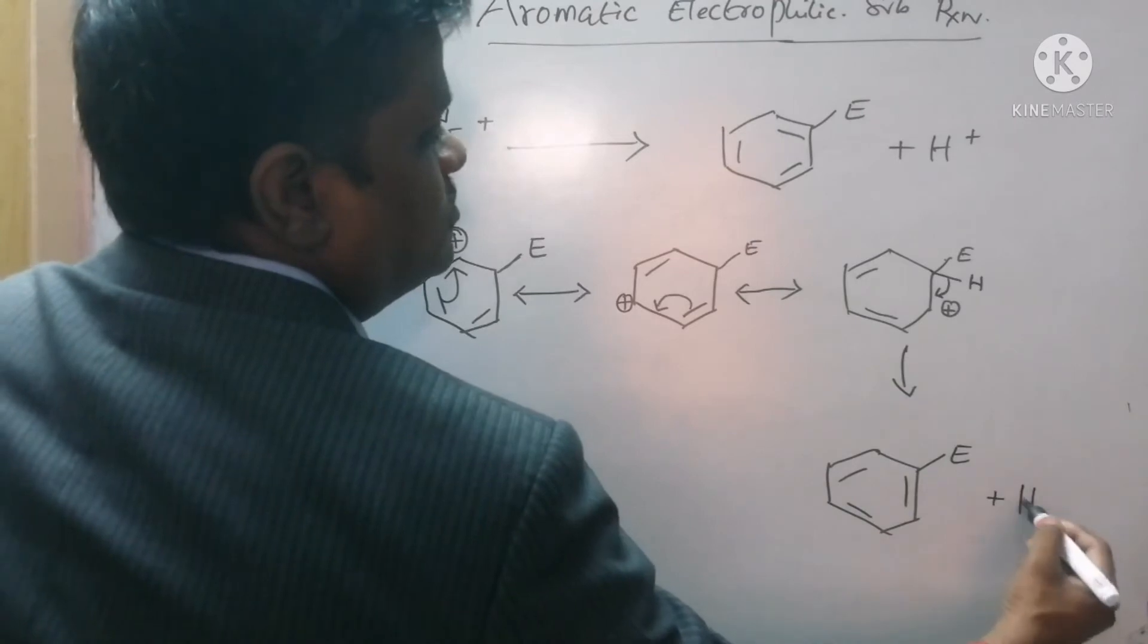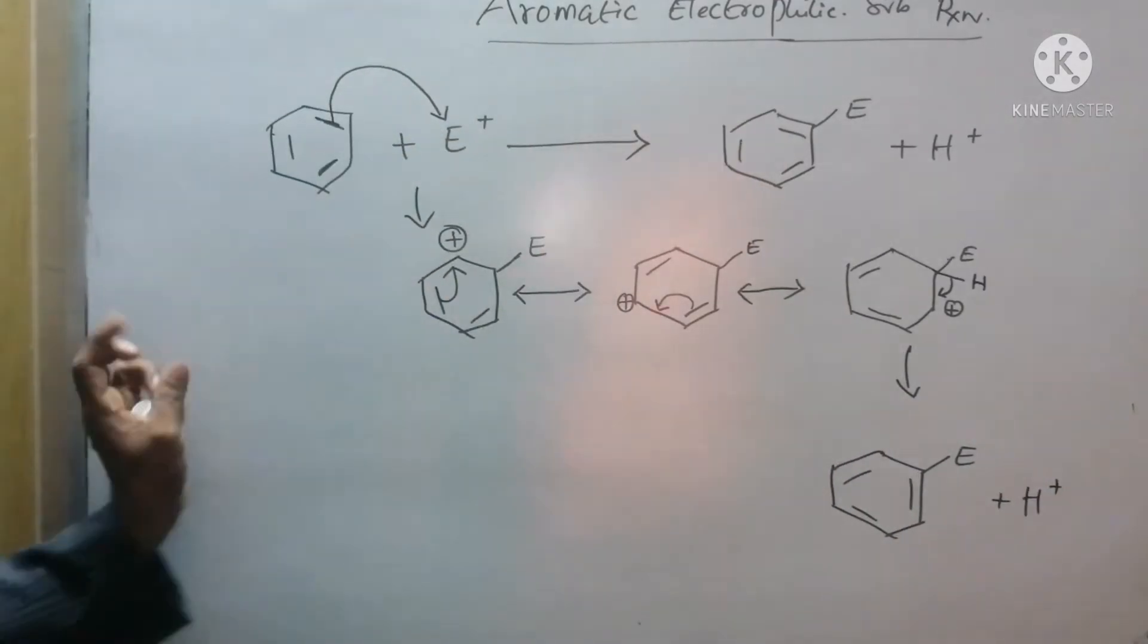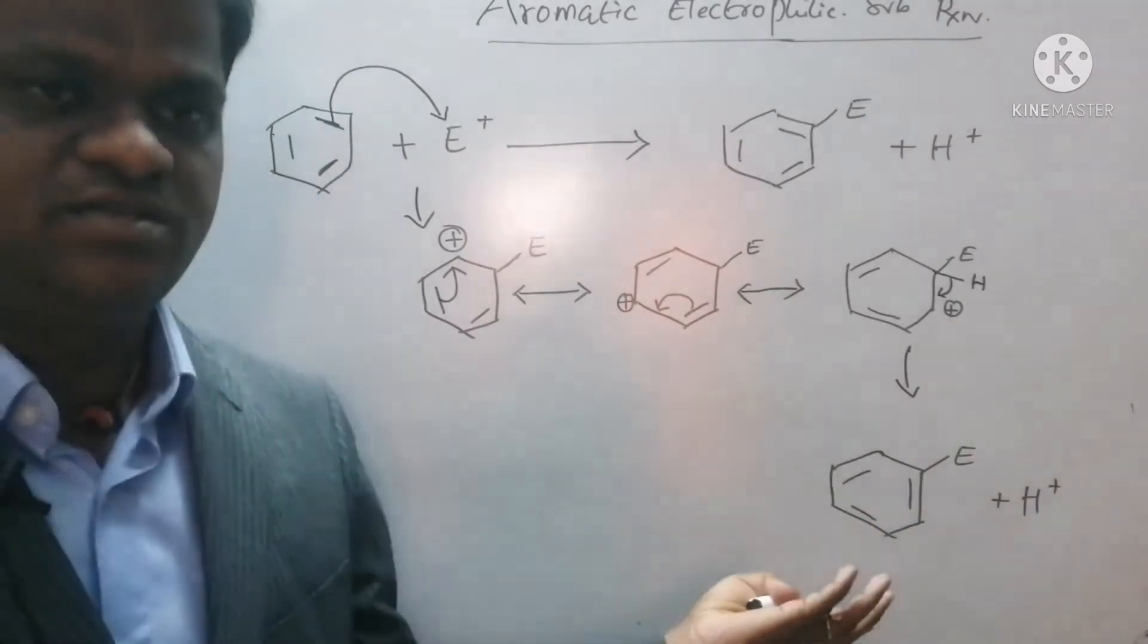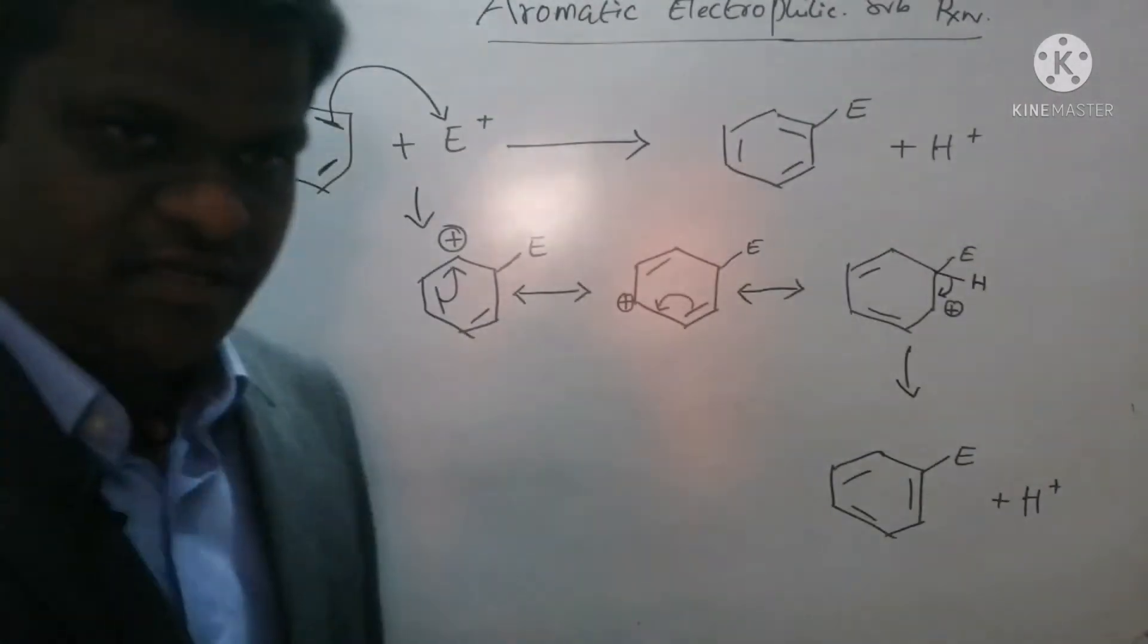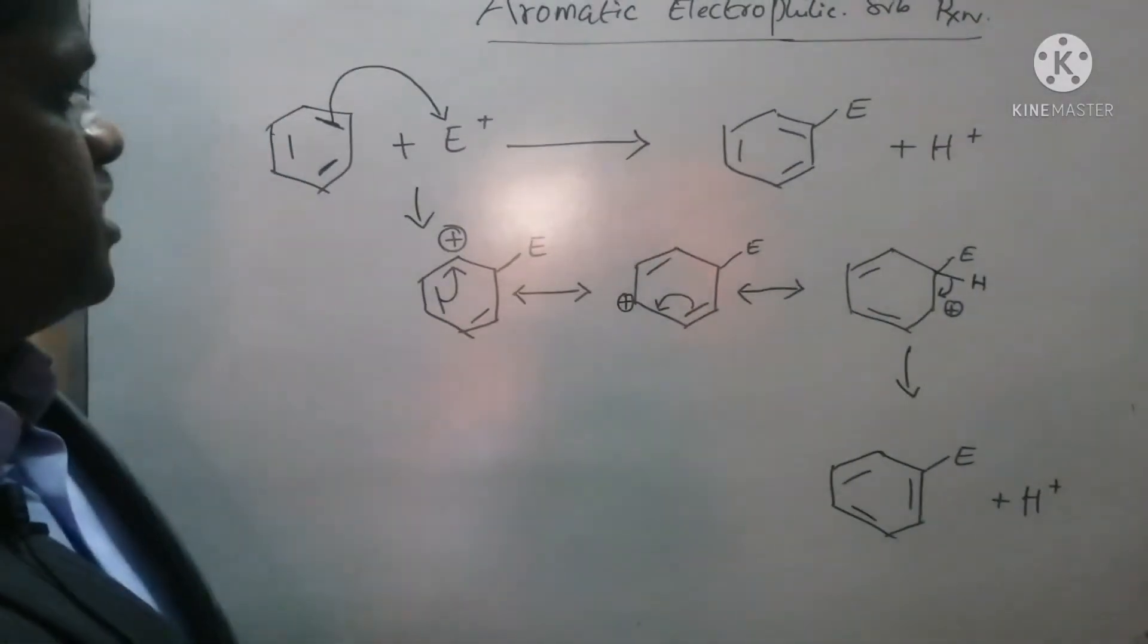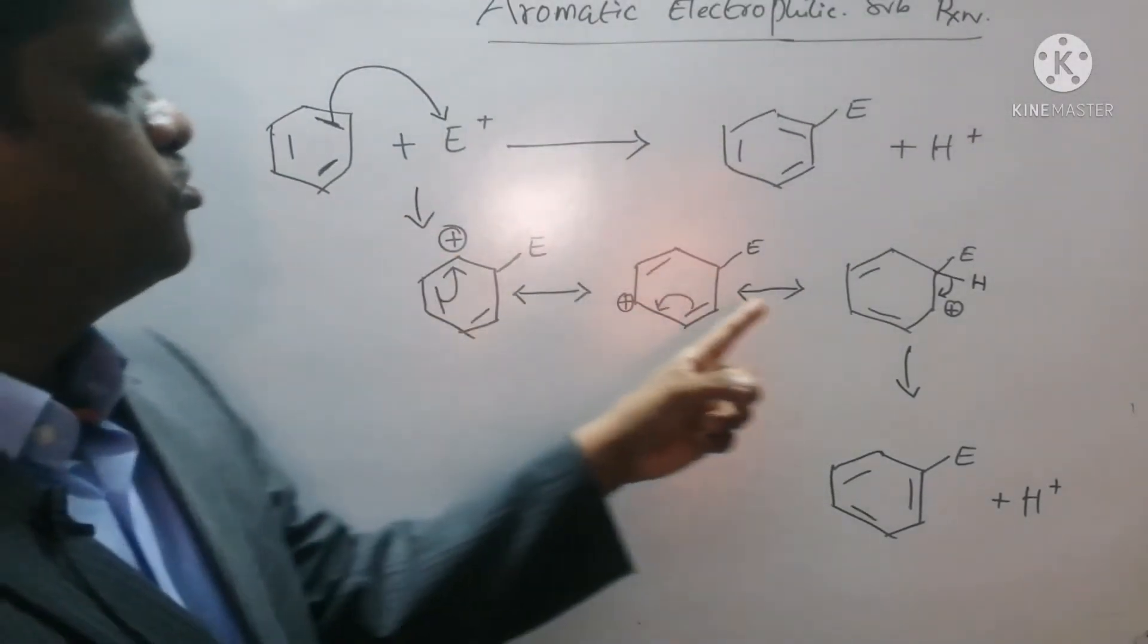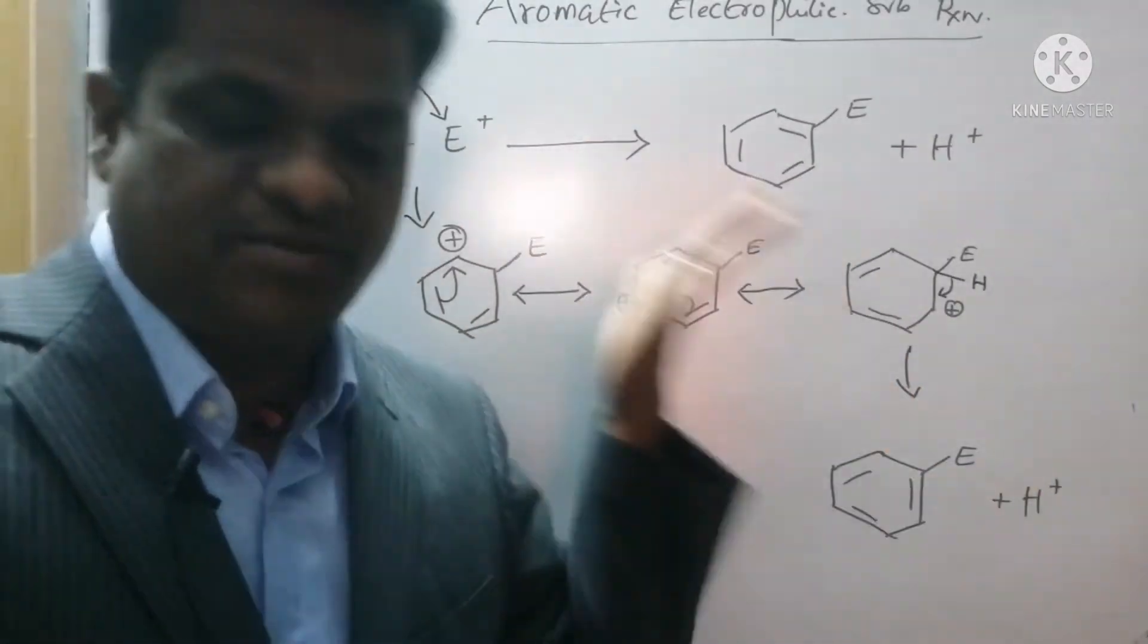So this is the reaction mechanism. Now my next question is, could you tell me how many steps have been involved in this reaction? In my experience, generally the students used to calculate the number of arrows I used. So what they used to say: one, two, three, four. They used to say it contains four steps.